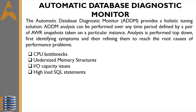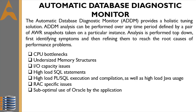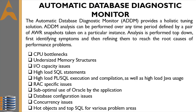Further problem types include: high load SQL statements consuming excessive system resources; high load PL/SQL execution and compilation; high load Java usage; RAC-specific issues such as global cache hot blocks and interconnect latency; suboptimal use of Oracle by the application such as poor connection management, excessive parsing, or application-level lock contention; database configuration issues such as incorrect sizing of log files, archiving issues, or excessive checkpoints; and concurrency issues including buffer busy problems and hot objects.